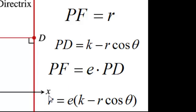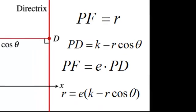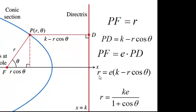Solving in PF is R, so putting in R for PF. There's our E and our PD is K minus R cosine theta. We have two R's in our equation here. So if we solve for R, we get R equals K, which is the Y value, times the eccentricity, divided by 1 plus E cosine theta. We'll be using that equation.